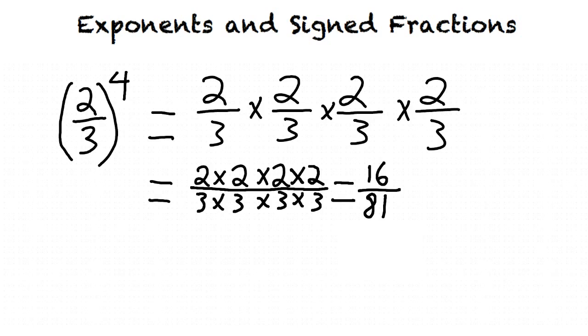I think I understand now. First, I write the fraction the number of times stated by the exponent. Then, I multiply the numerators across and the denominators across.